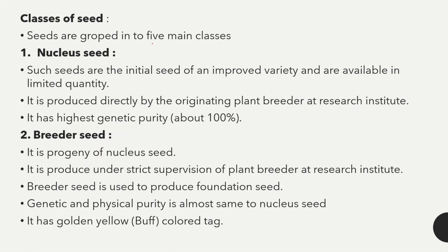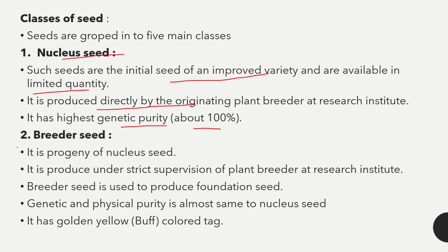The classes of seeds are: first, nucleus seed — the initial seeds of an improved variety, available in limited quantity, produced directly by the originating plant breeder at the research institute. It has the highest genetic purity of about 100 percent. Nucleus seed se breeder seed form hota hai, isliye hum breeder seed ko progeny of nucleus seed bolte hain.